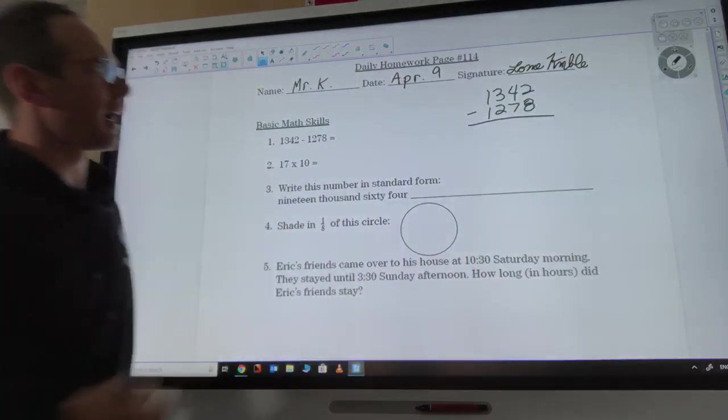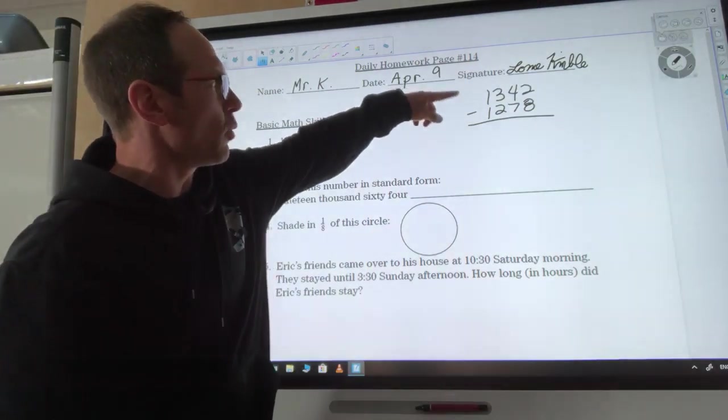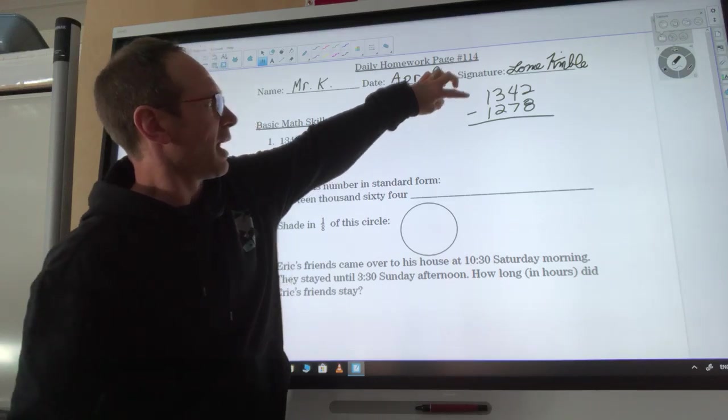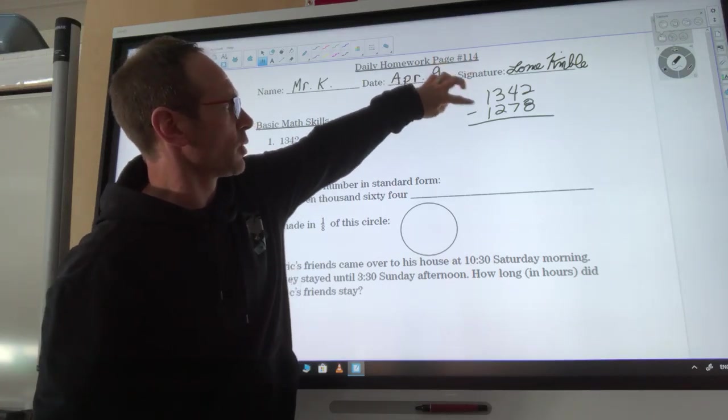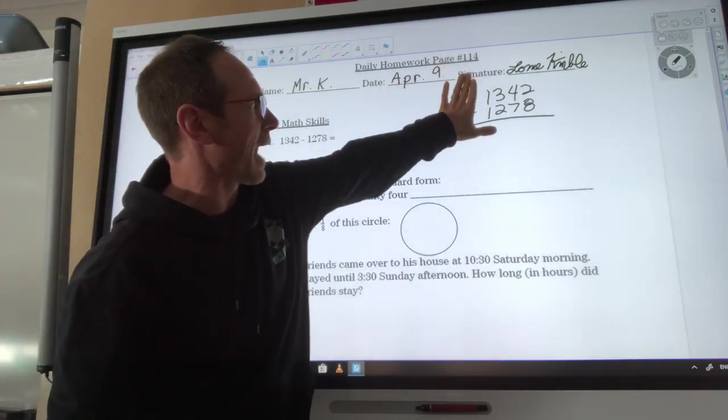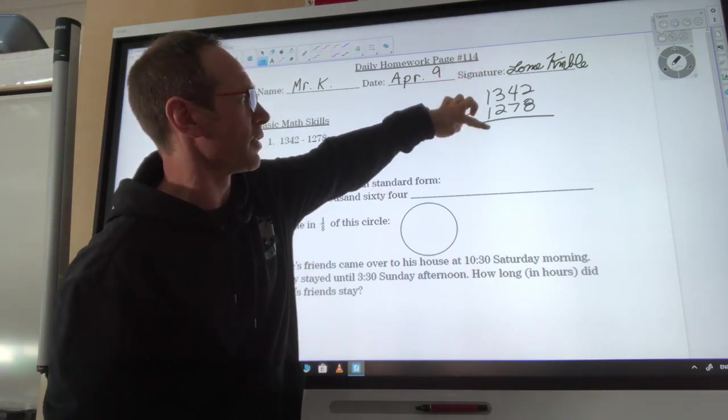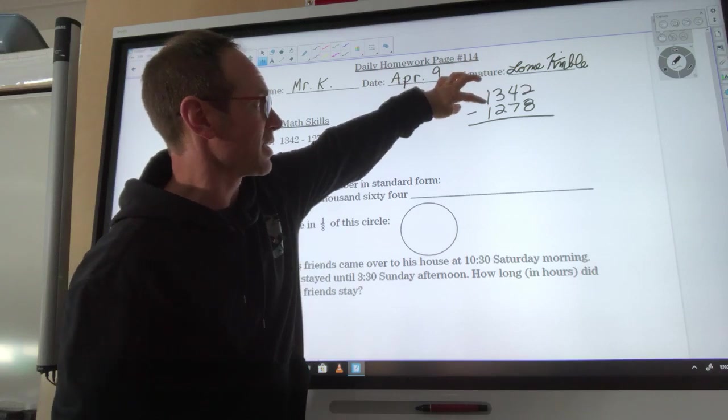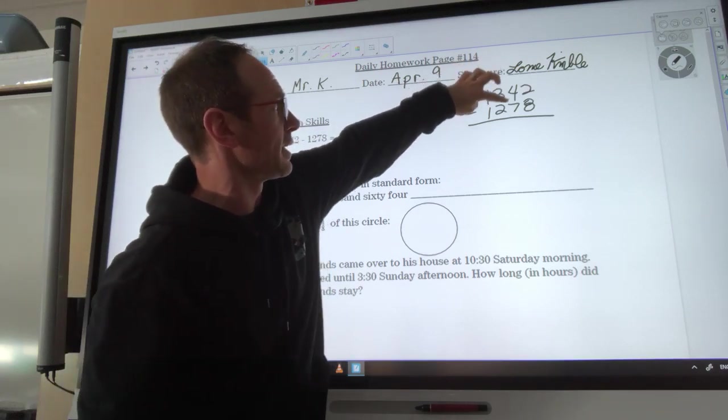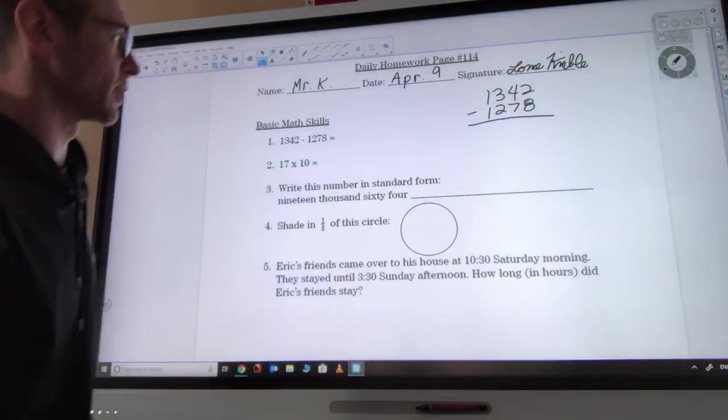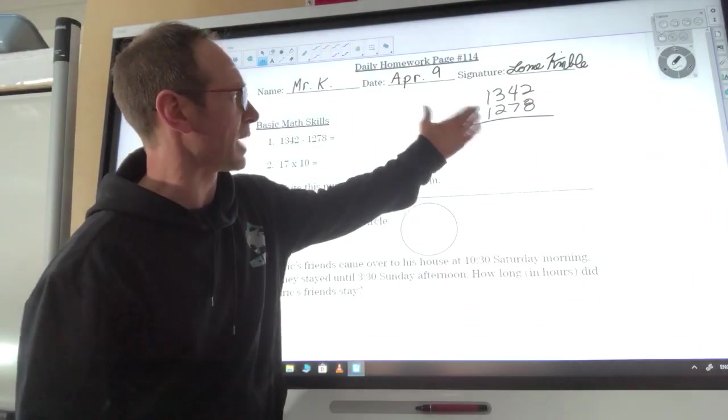First of all, I'm gonna look at this and think about what is the answer gonna be. I have a thousand minus a thousand, so I know it's gonna be out of the thousands and into the hundreds. Then I have 300 minus 200, so that's in the hundreds. It's gonna be less than 100 because this is 40 minus 70. That's what I'm gonna know with my answer in the end.